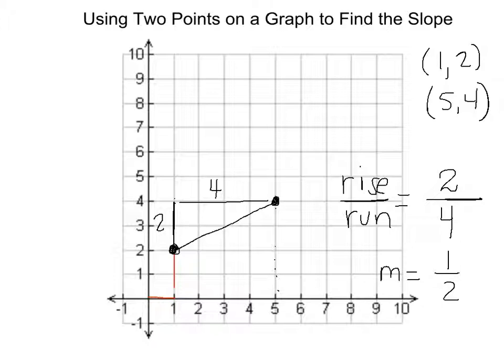And since the line is moving in an upward direction as I go from left to right, then I can say that this is a positive slope.